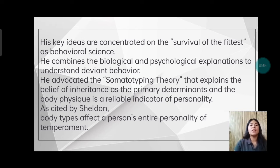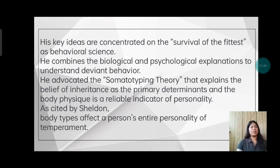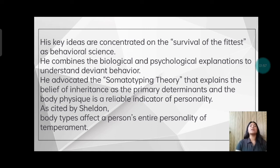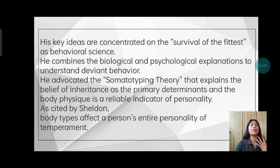He advocated the somatotyping theory, which explains the belief that inheritance is the primary determinant and that body physique is a reliable indicator of personality. Psychologist William Sheldon came up with somatotypes in the 1940s, and they were one of the biological theories developed at that time that attempted to explain and predict crime based on a person's body type.